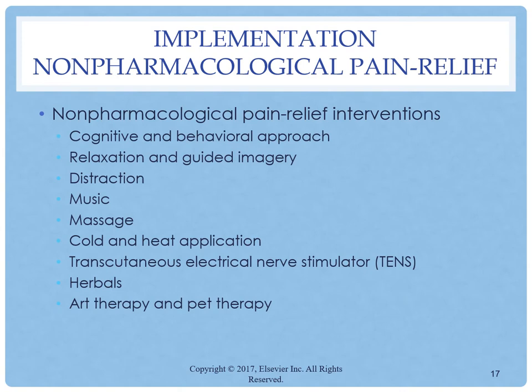In the case of acute pain, non-pharmacological measures should never be used in place of pharmacological therapies. Cognitive and behavioral interventions change patients' perceptions of pain, alter pain behavior, and provide a greater sense of control. Examples include distraction, prayer, guided imagery, biofeedback, and music. Music therapy may be useful in treating acute or chronic pain, as well as stress, anxiety, and depression.